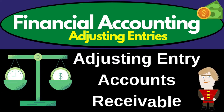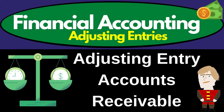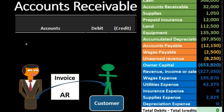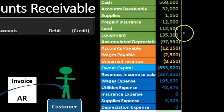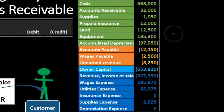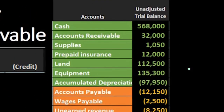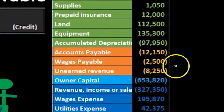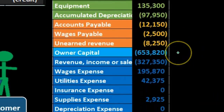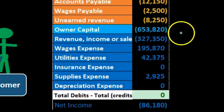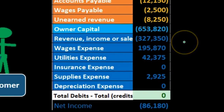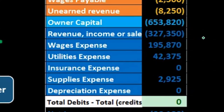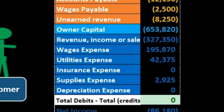In this lecture we're going to record an adjusting transaction related to accounts receivable. We're going to record the journal entry over here on the left hand side and then post it to the trial balance on the right hand side. The trial balance is in a format of assets in green, liabilities in orange, equity in the light blue, and the income statement in the darker blue, including revenue and expenses.